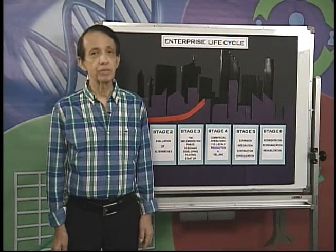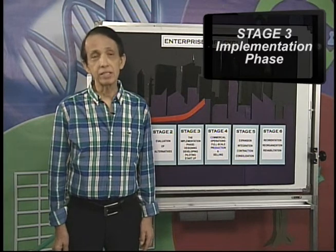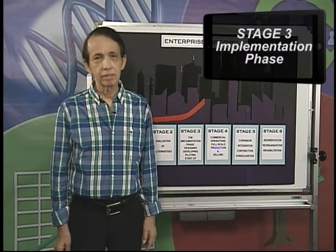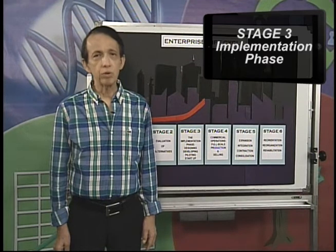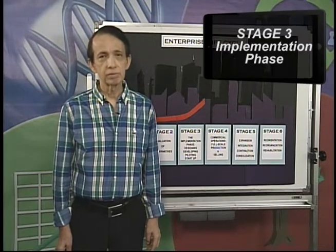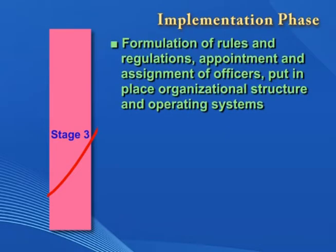The third stage of the enterprise lifecycle is the implementation phase. The organizers and owners of the enterprise put in their own equity financing. In case there is a shortfall, the owners and organizers raise debt financing to cover this shortfall. In the implementation phase, rules and regulations are formulated to govern the management working relationships and job content of the enterprise. Officers are appointed, and assignments are given out. The organizational structure and operating systems are put in place.